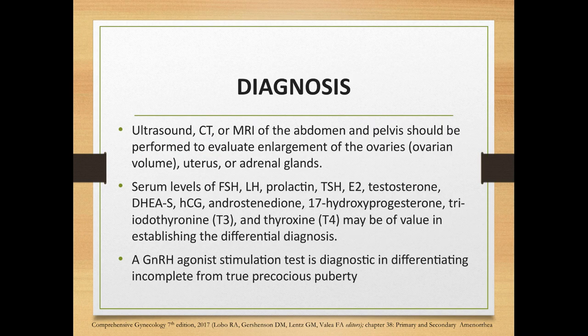Other workups include ultrasound, CT scan, or MRI of the abdomen and pelvis to evaluate the ovaries, uterus, and adrenal glands. Serum levels of FSH, LH, prolactin, TSH, estradiol, testosterone, DHEAS, HCG, androstenedione, 17-hydroxyprogesterone, triiodothyronine, and thyroxine may be valuable in establishing the differential diagnosis. A GnRH agonist stimulation test is diagnostic in differentiating incomplete from true precocious puberty.